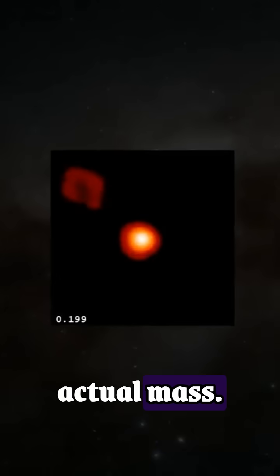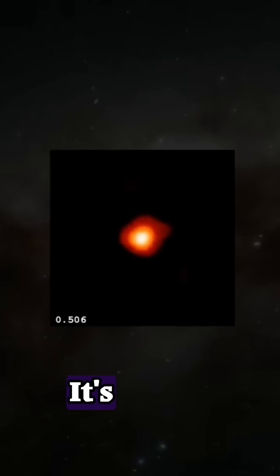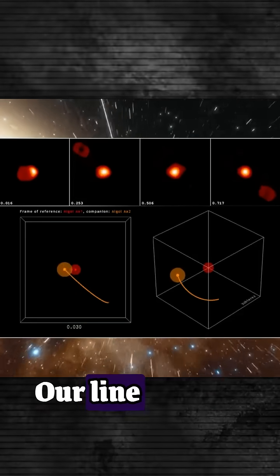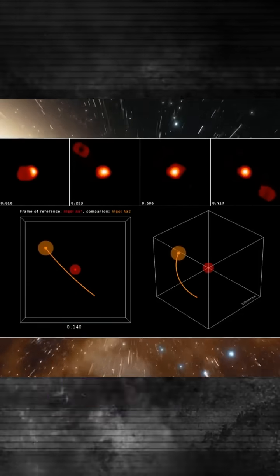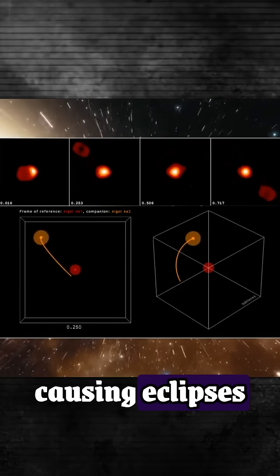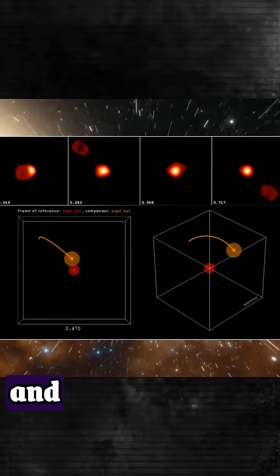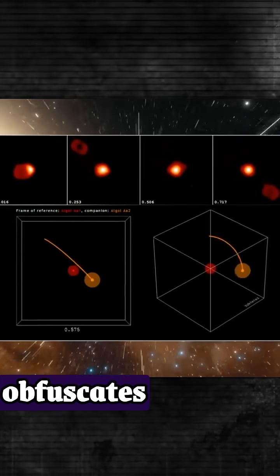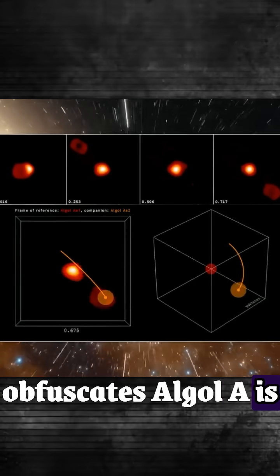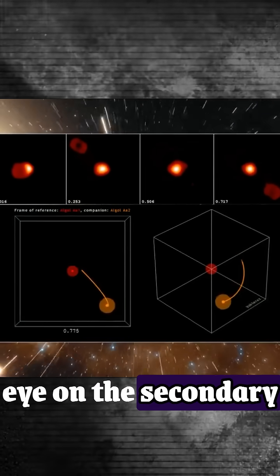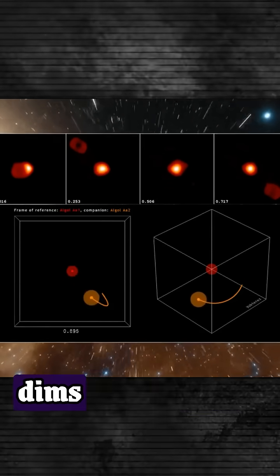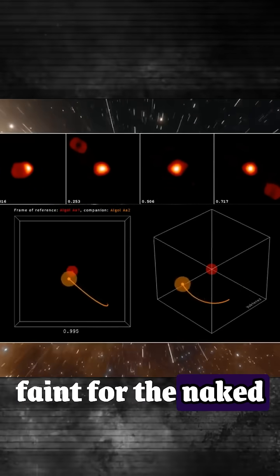While Algol A is brighter and has more actual mass, Algol B has a larger radius. It's bigger but dimmer. Our line of sight happens to align with the orbital plane of these two stars causing eclipses during each orbit. Primary eclipse where the larger and dimmer Algol B obfuscates Algol A is visible to the naked eye, while the secondary eclipse where Algol A slightly dims Algol B is too faint for the naked eye to observe.